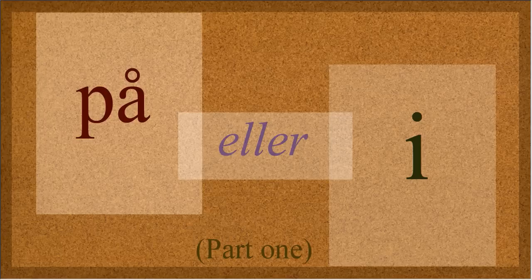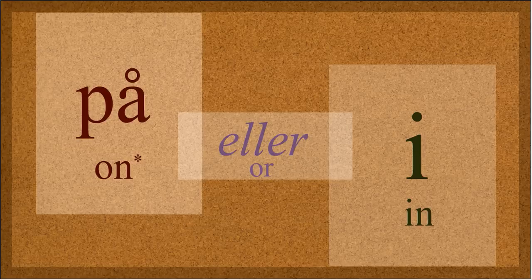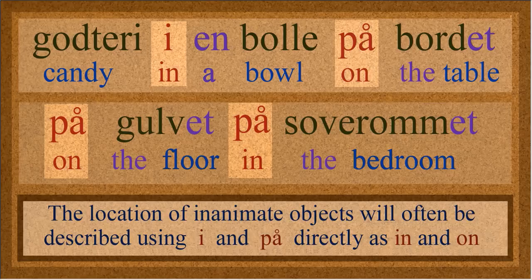When I first learned these prepositions, I learned that på means 'on' — physically on something — and i means 'in.' Along with all the other prepositions, you learn the simple physical description of what they are. But it doesn't take long to figure out that they mean other things. Here's an example of 'in' and 'on' where they match that description.